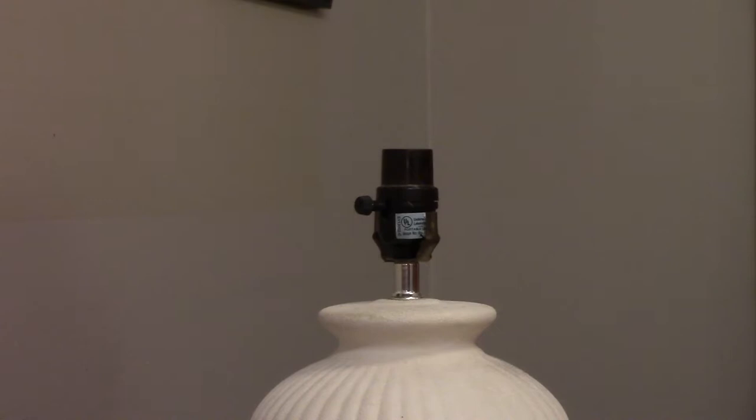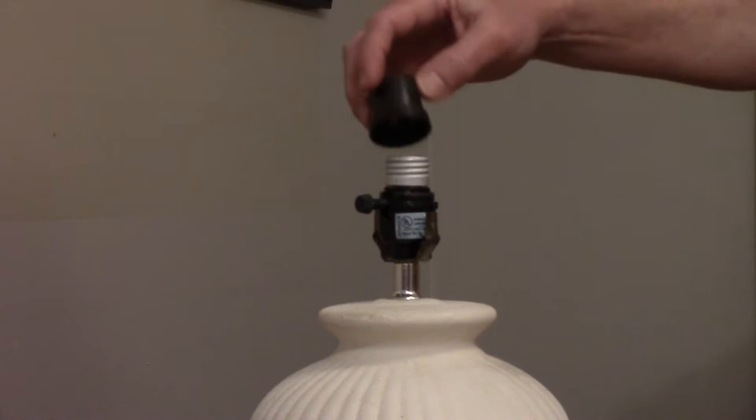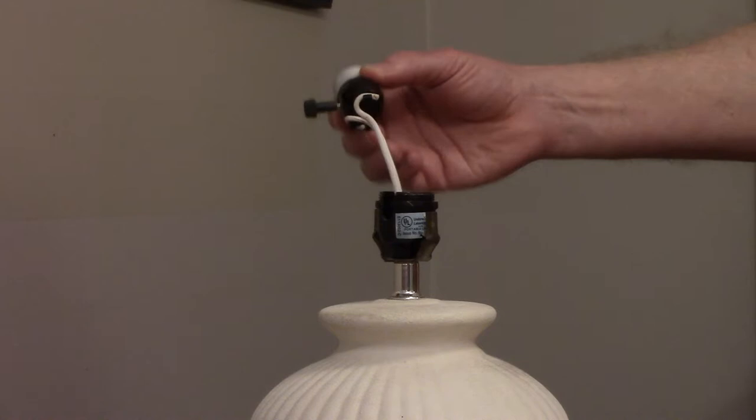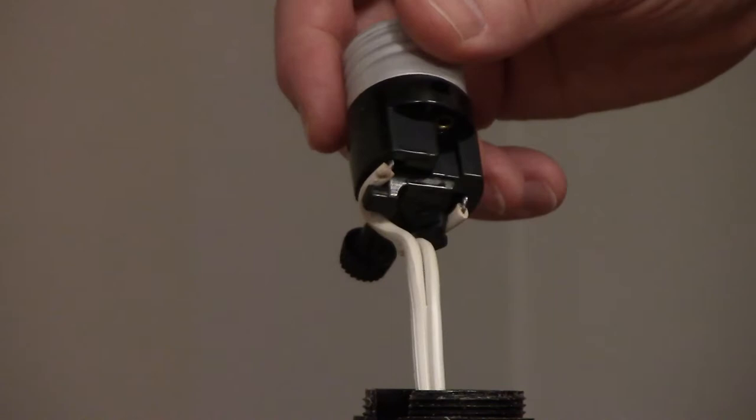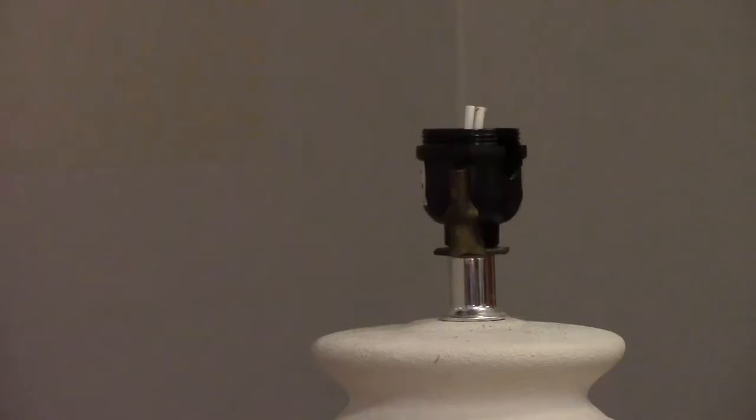Unplug your lamp and remove the outer shell by unscrewing the top of it. In many lamps with a phenolic socket, the wires are connected directly to the socket. They don't have screw terminals. To replace the socket, you're just going to cut off the old wires. Now you can unscrew the base.